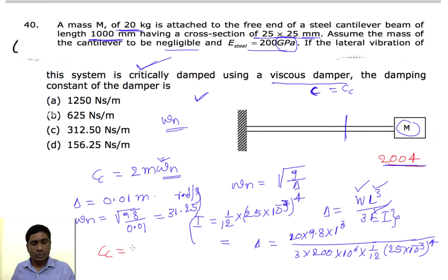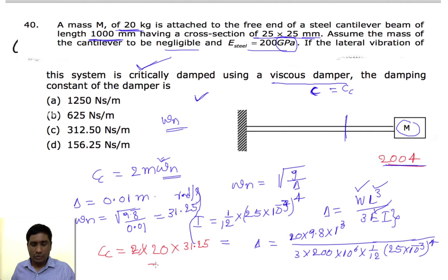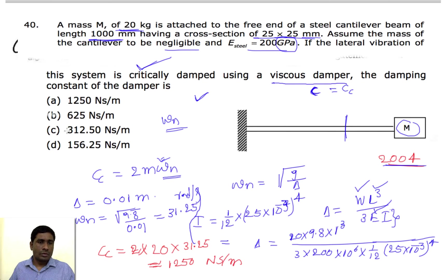Now the final answer: cc = 2m·ωn = 2 × 20 × 31.25 ≈ 1250 N·s/m. Therefore option A is the answer.